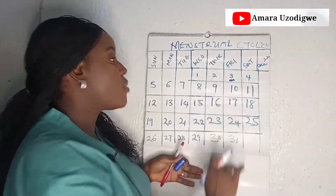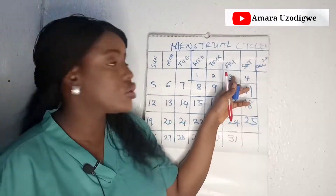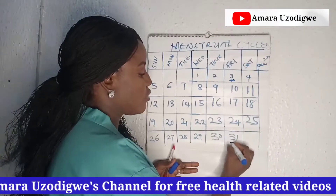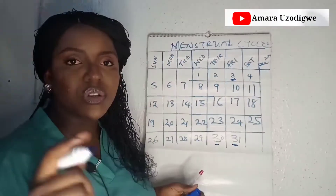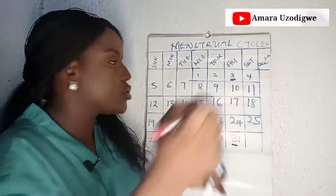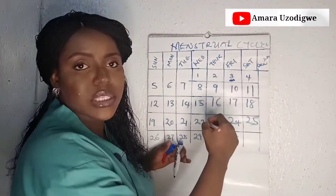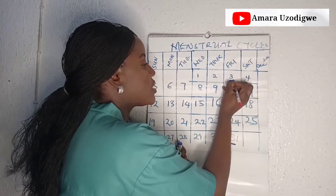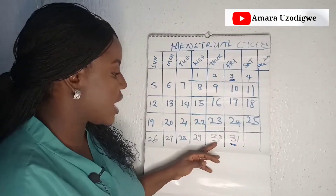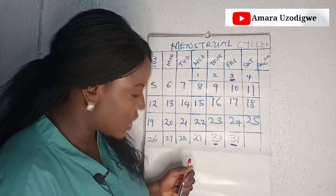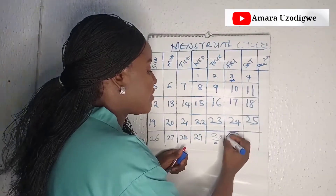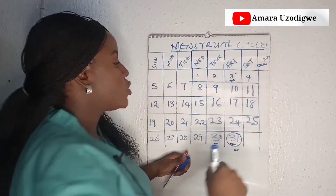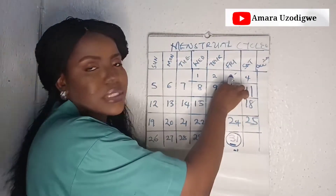Let's say this is a calendar for October 2021 and your period started on the 3rd of October, and the next period started on the 31st of October. Once your period starts, use your red pen to circle it and write 'period starts.' When your next period starts on the 31st of October, you then begin counting.